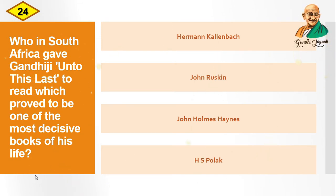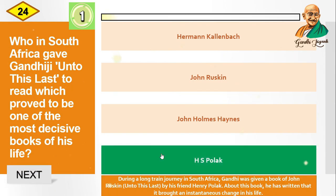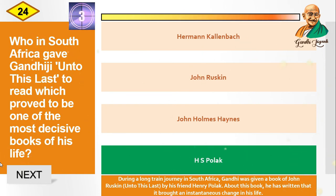Question: Who in South Africa gave Gandhiji "Unto This Last" to read, which proved to be one of the most decisive books of his life? Options are: Herman Kallenbach, John Ruskin, John Holmes Highness, H.S. Polak. The correct answer is H.S. Polak. During a long train journey in South Africa, Gandhiji was given the book by his friend Henry Polak.